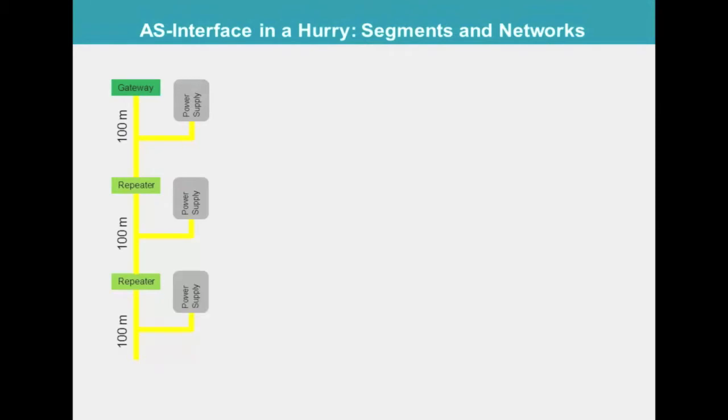This is a valid 300 meter linear network. To simplify the drawings, we will assume power supplies to be present, but will no longer show them. Let's start with a linear network and add a repeater here. This is allowed as long as the first segment containing the gateway is no more than 100 meters long.